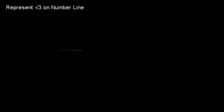So we can say if we have a right angle triangle in which one side is root 2 and another side is 1, then its hypotenuse is equal to root 3.